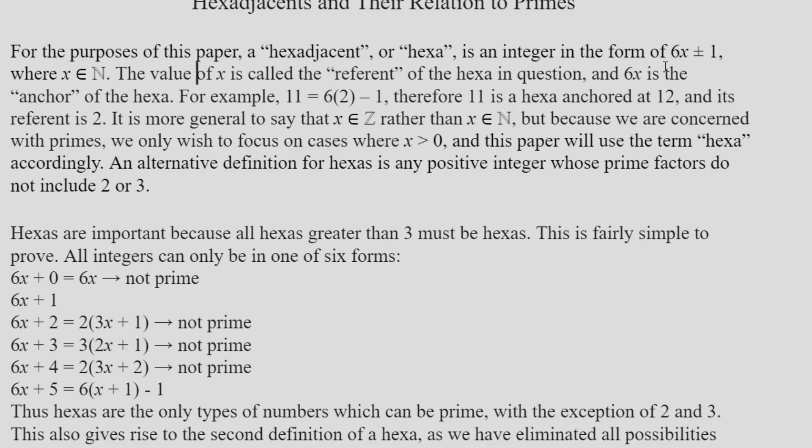In addition to that, there is also the anchor of a given hexa, and that is that 6x to which it is adjacent. And then the number x is the referent of that hexa. So in the example I give, 11 equals 6 times 2 minus 1. So 11 is a hexa that is anchored to 12, and its referent is 2, because that's the number you multiply by 6.